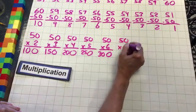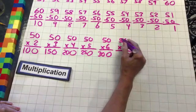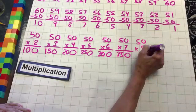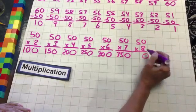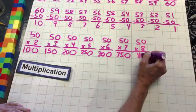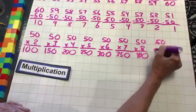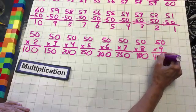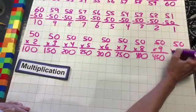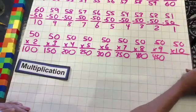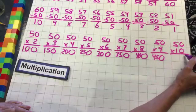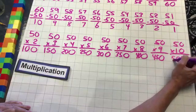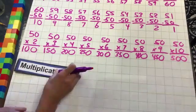50 times seven: seven times zero is zero, seven times five is 35. 50 times eight: eight times zero is zero, eight times five is 40. 50 times nine: nine times zero is zero, nine times five is 45. Then 50 times 10: we don't multiply by zero down here, so we just drop it down. One times zero is zero, one times five is five. Boom, done with multiplication.